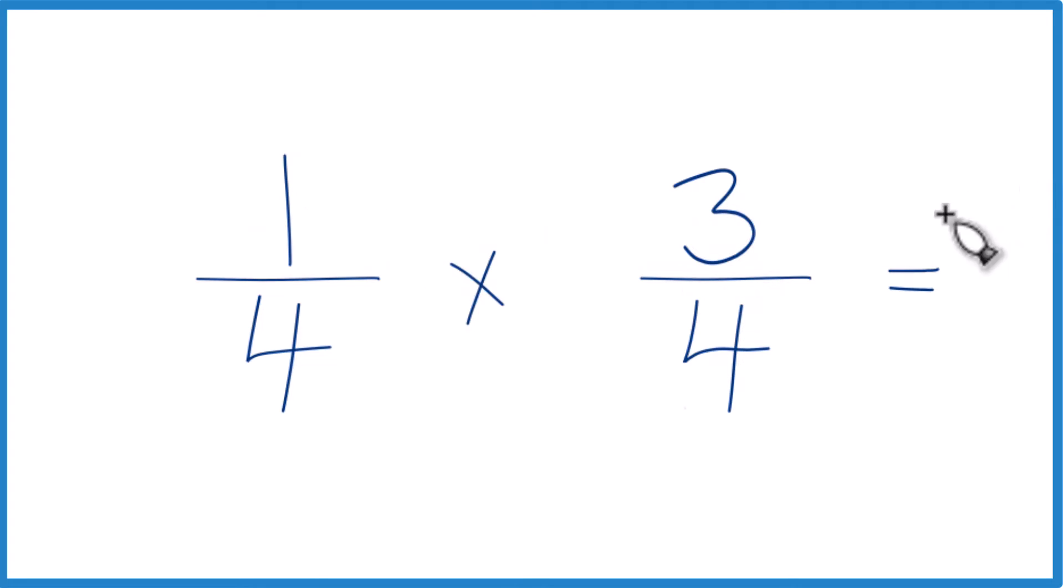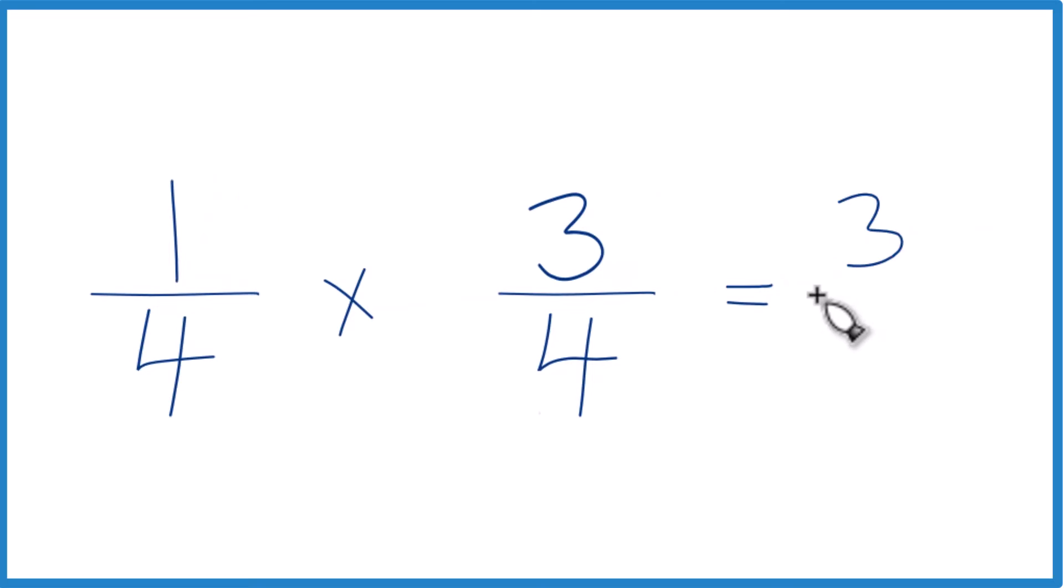We multiply the numerators. One times three, that's three. And four times four, we multiply our denominators. Four times four is 16.